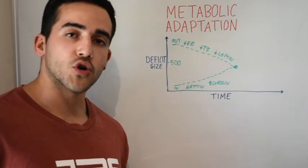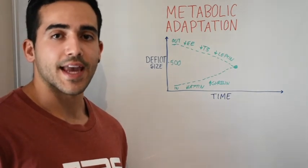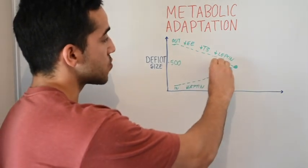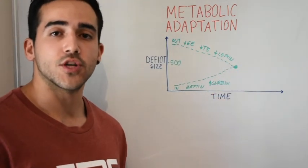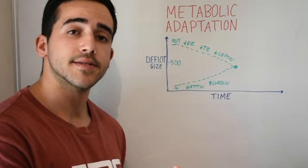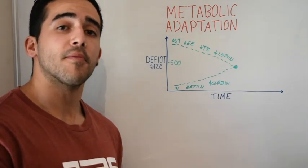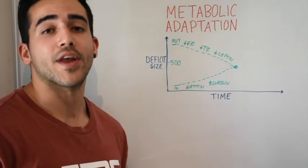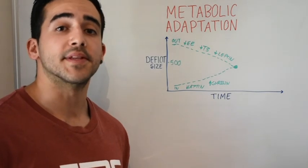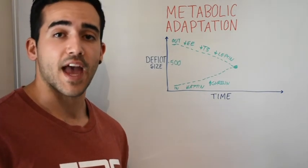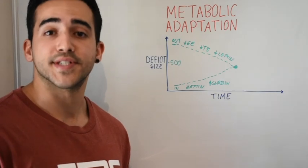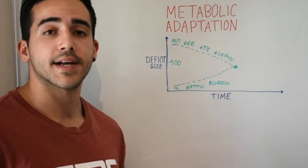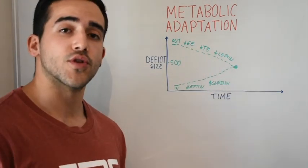So to recap what we have talked about today, when you start a diet, inevitably metabolic adaptation will occur and the deficit size will start to decrease, ultimately leading you to being at maintenance and not losing any further weight. From then what you would need to do is decrease your calorie intake further or increase your energy output, but just remember that your metabolism is very adaptive and it will keep adapting to what you are presenting it with.